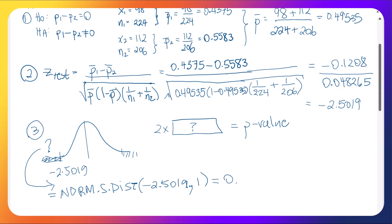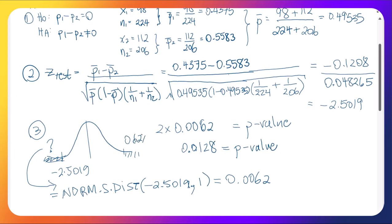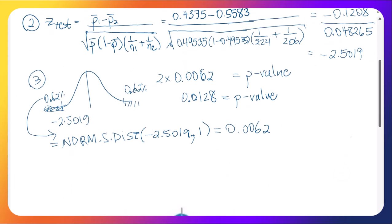So, we just do a straight equals, and then comma 1 for cumulative equals to true. And that gives us 0.0062, or 0.62%. Multiply that by two because for two-tailed tests, we must multiply by two. So that ends up giving us 1.28% for our P value. And that's really like 0.62% on either side.